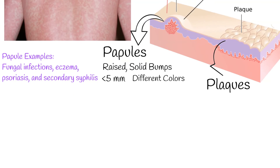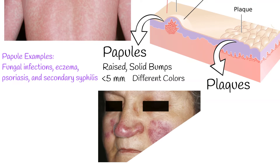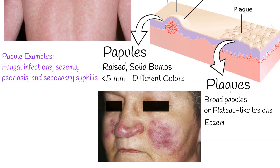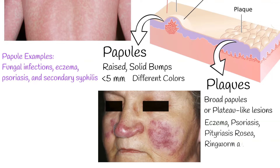Plaques can be described as broad papules which are greater than 5 mm, or flat, plateau-like lesions. Plaques can be caused by eczema, psoriasis, pityriasis rosea, ringworm, and tinea versicolor.